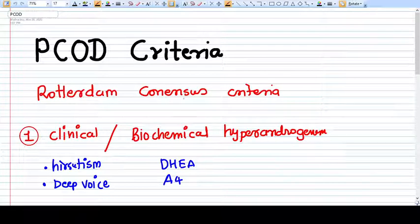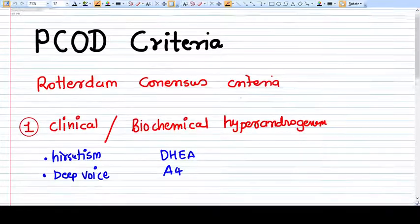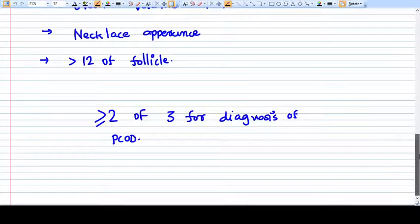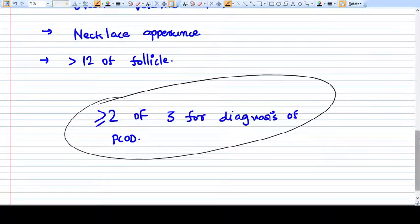Hello everyone, in this capsule video we will discuss the PCOD criteria or the Rotterdam consensus criteria. There are three criteria and two of the three if present can be taken as a diagnosis of PCOD, that is polycystic ovarian disease.